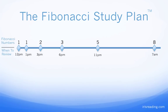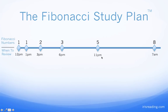So we review the information at 12 p.m. Our next Fibonacci number is 1, so 1 hour later we review at 1 p.m. The next Fibonacci number is 2, so 2 hours later that's 3 p.m. Then 3 hours later is 6 p.m. 5 hours later is 11 p.m. And then 8 hours later is 7 a.m. This conveniently works out to overnight, so we get to sleep.